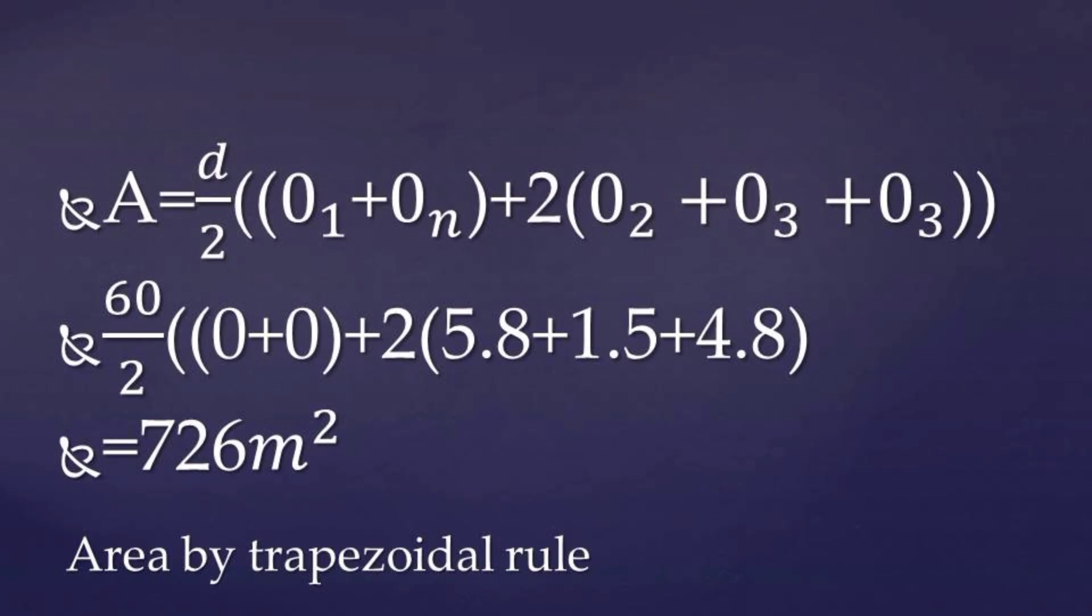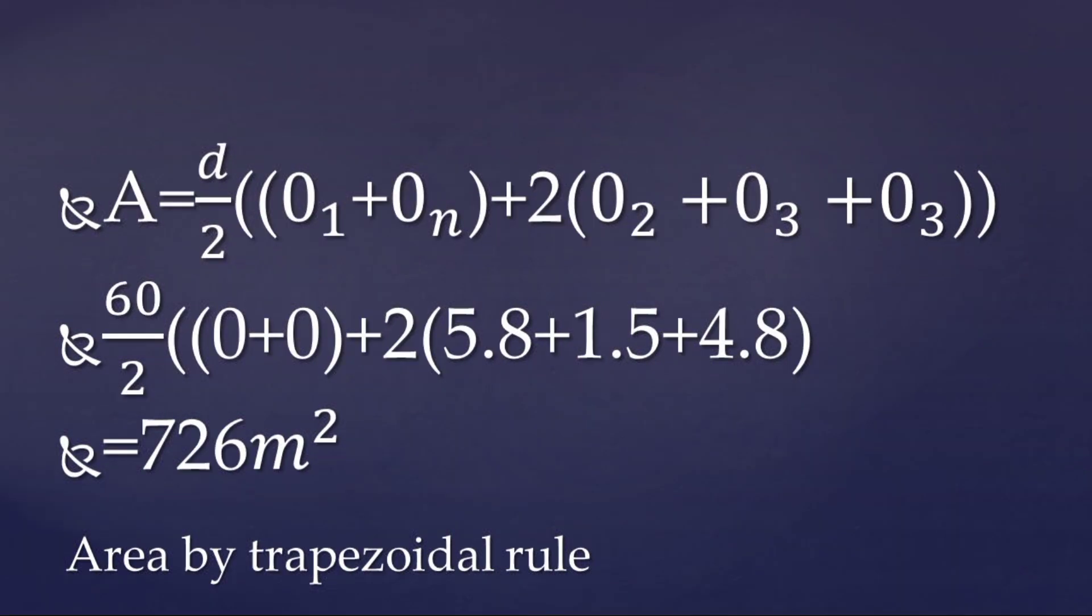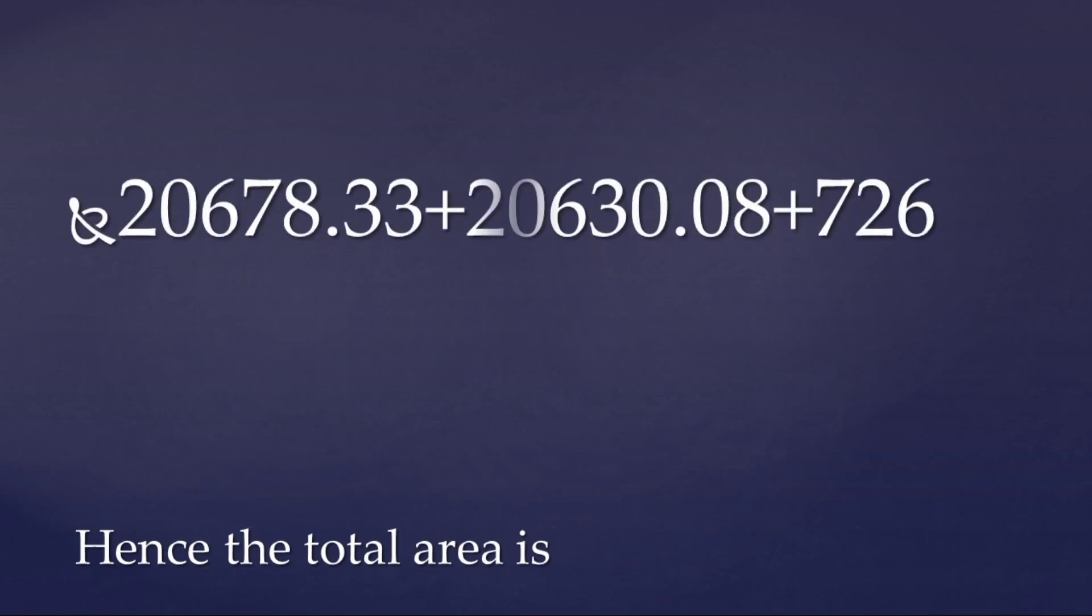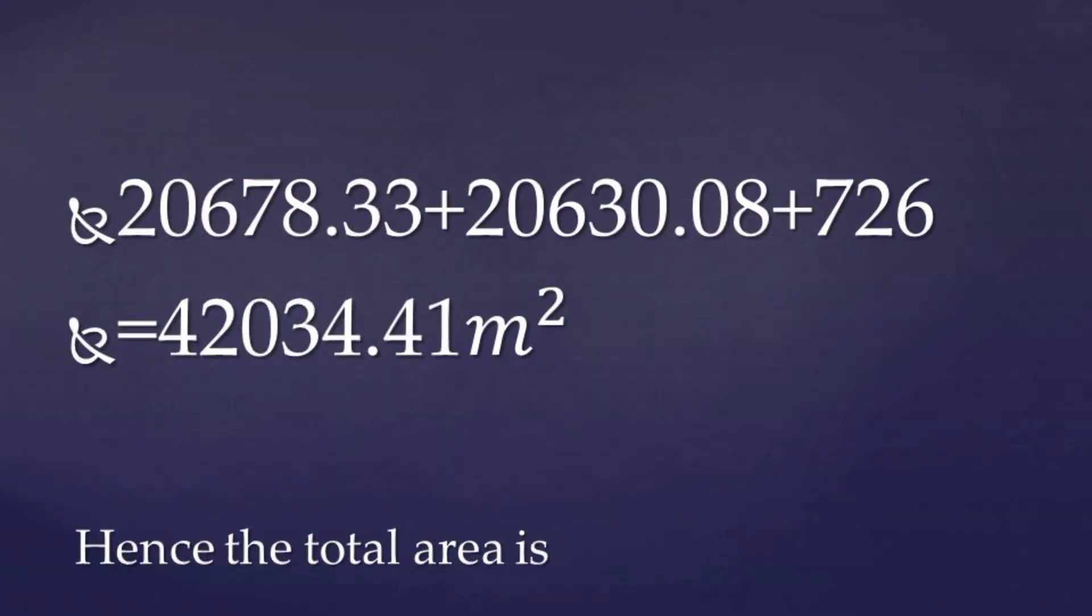Hence we find the total area of the parcel of land. So we add our areas which we had calculated earlier: the area for ABC, ACD, and our last irregular shape. After having done that, we will get our answer there as 4230.41 meters square.